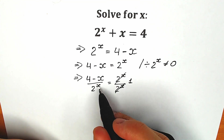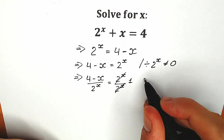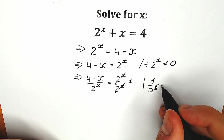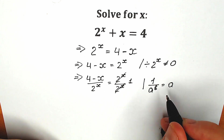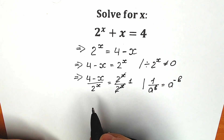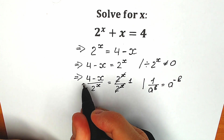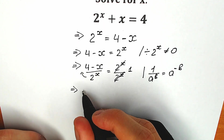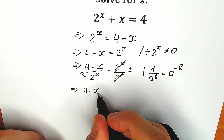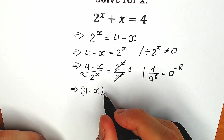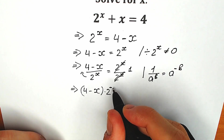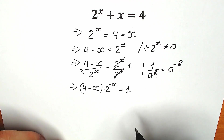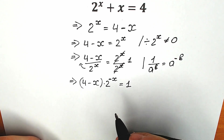On the left side, 2 to the power x is in the denominator, but there's a really important property: when you have 1 over a to the power b and want to write it in the numerator, you change the power to the opposite sign, giving a to the power minus b. So let's write 2 to the power x in the numerator as 2 to the power minus x. This gives us, in parentheses, 4 minus x times 2 to the power minus x equals 1. These are basic algebraic steps.